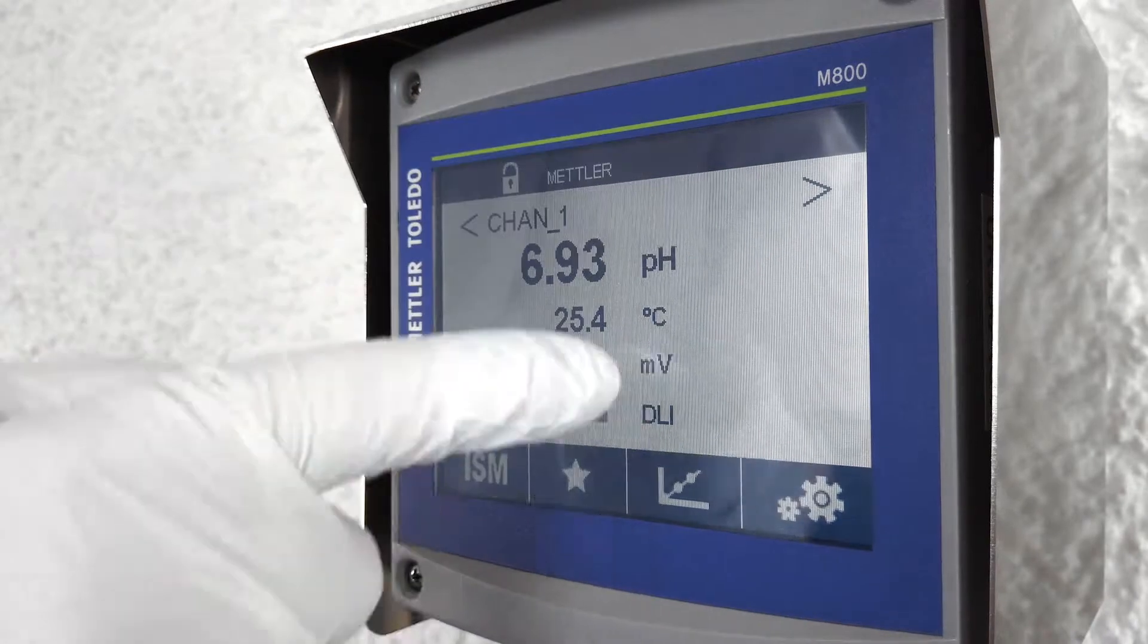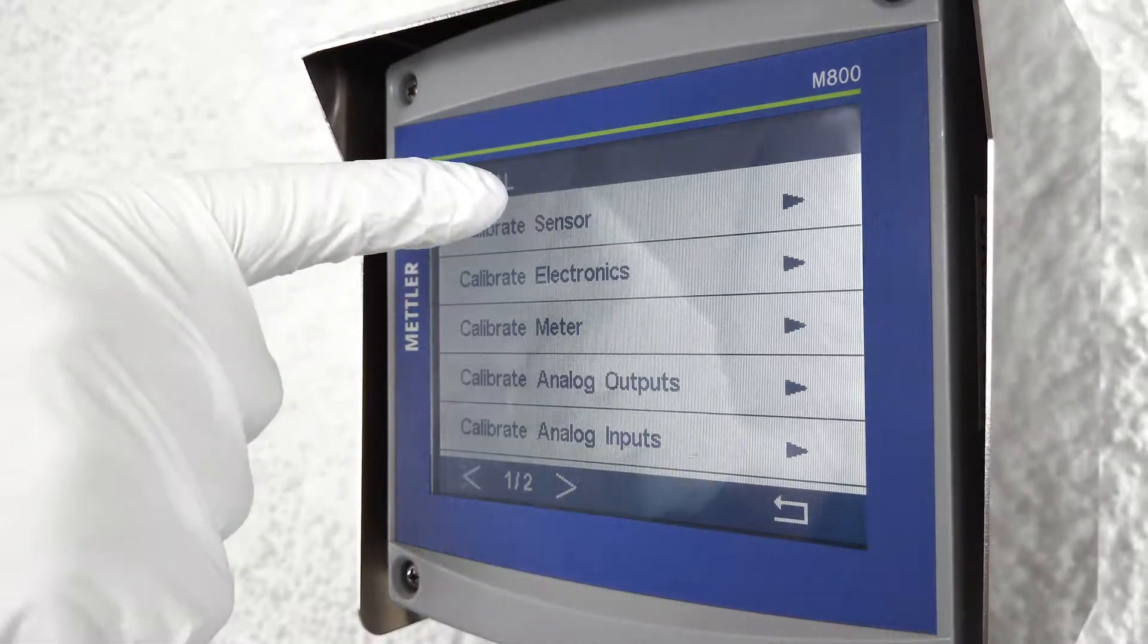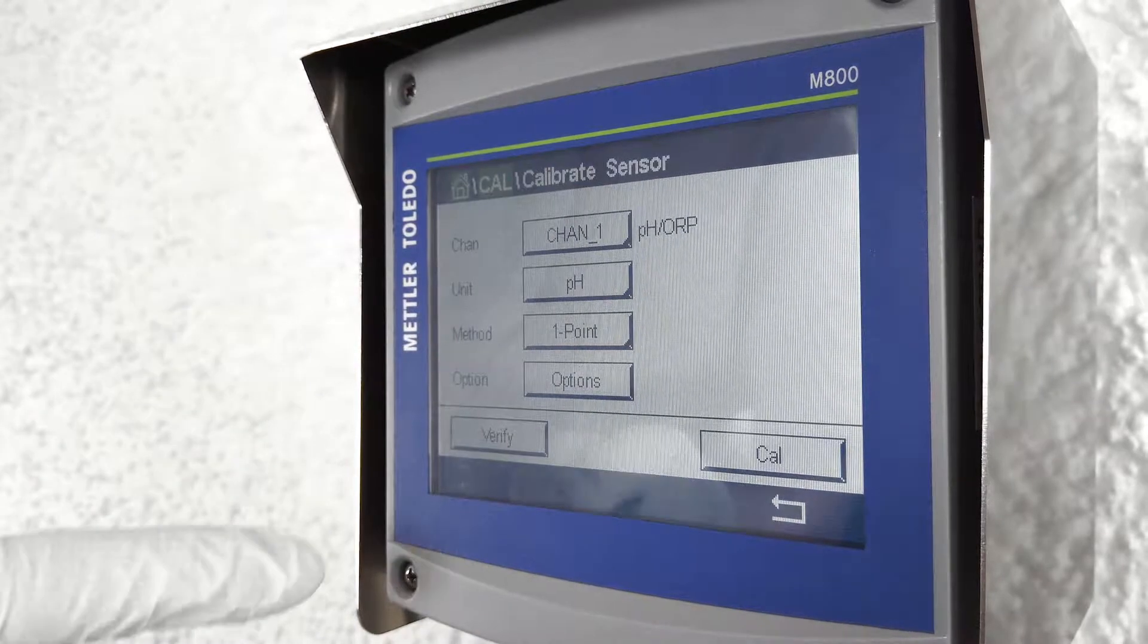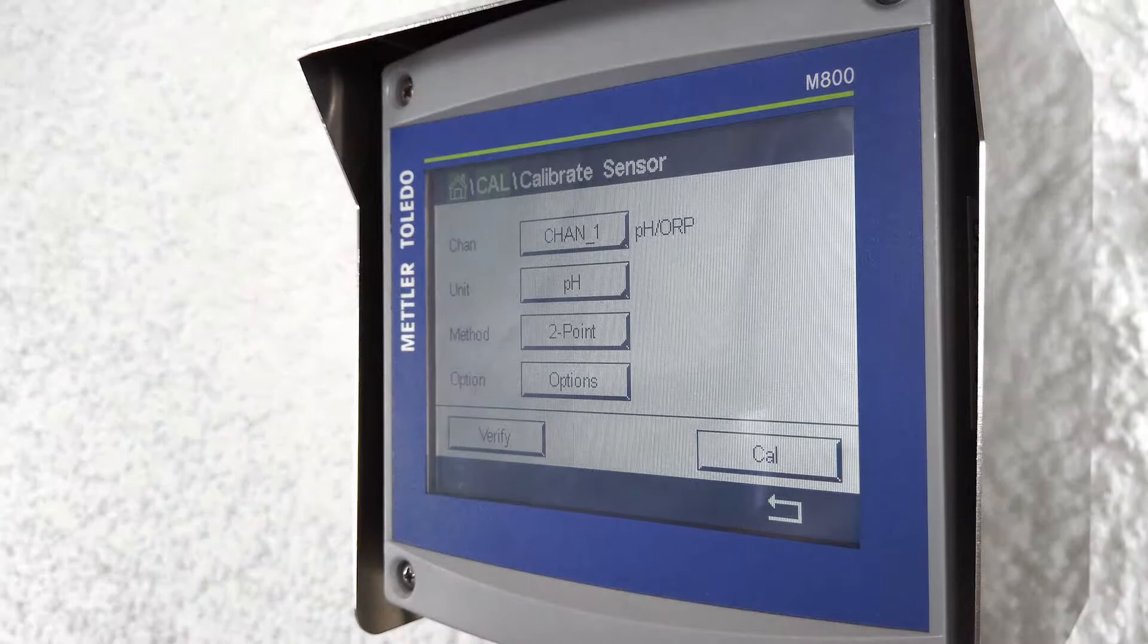On the transmitter select the calibration menu by clicking on the calibration button. Since this is a two-point calibration, click on method, select two-point, and press the calibration button.